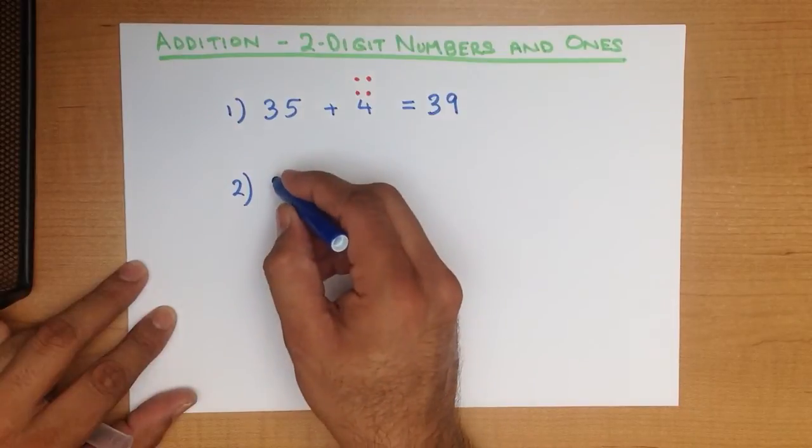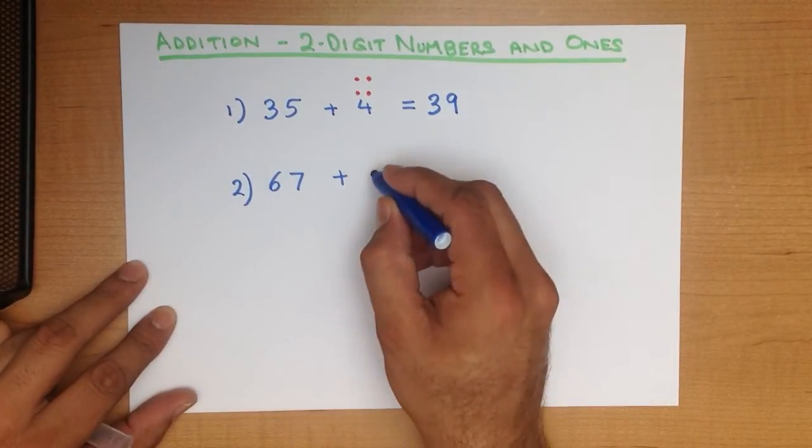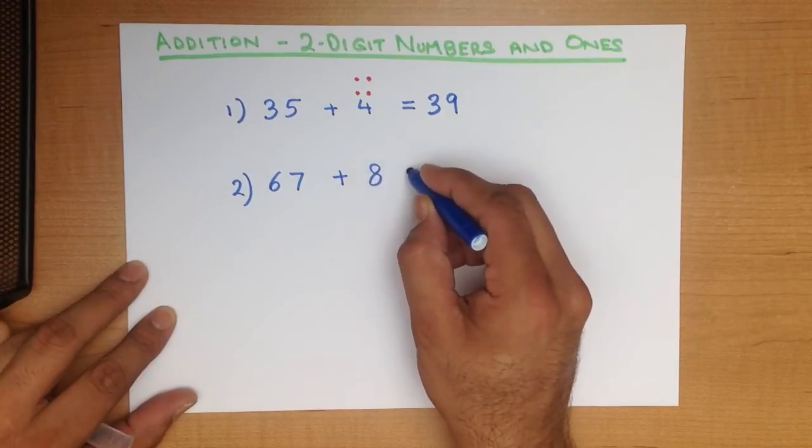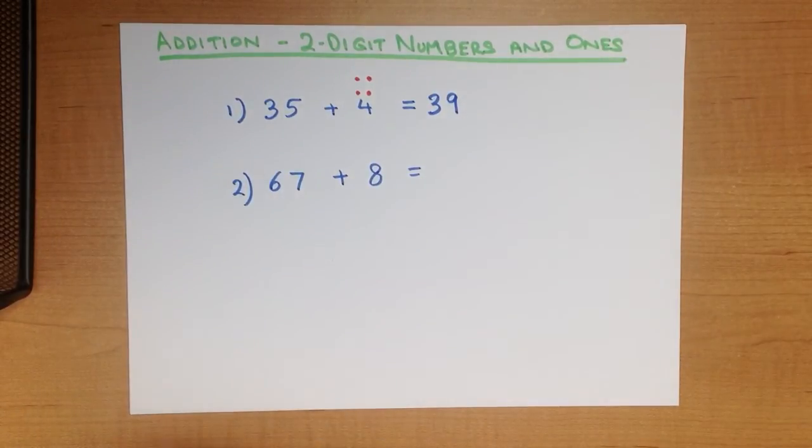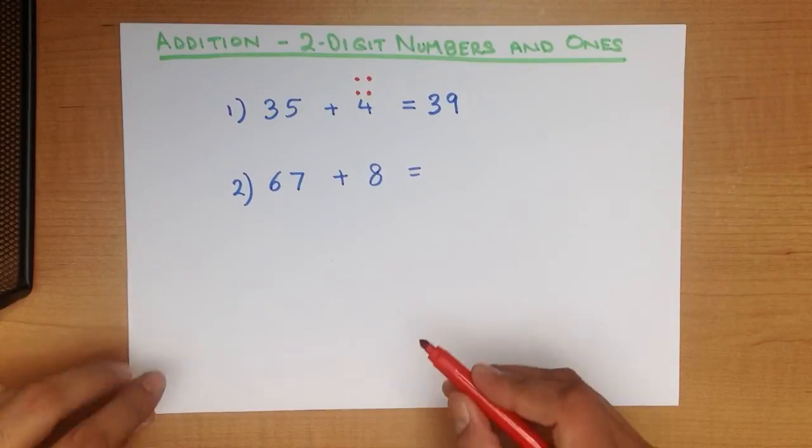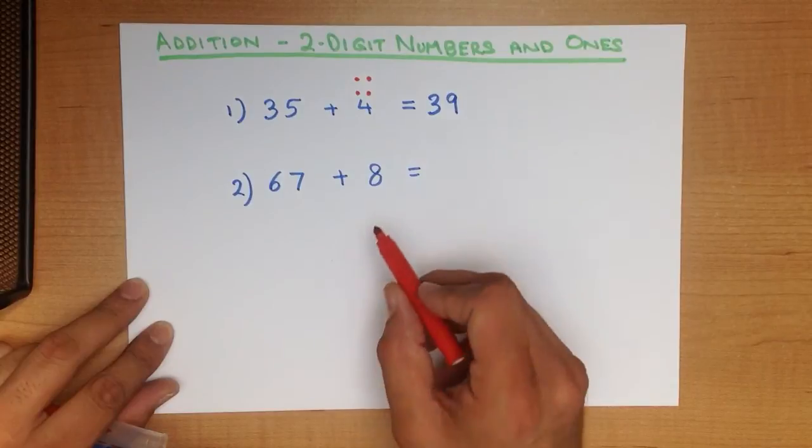What is 67 plus 8? Now with the dot method, what we do is we put the dots above the smaller number. So let's do that.